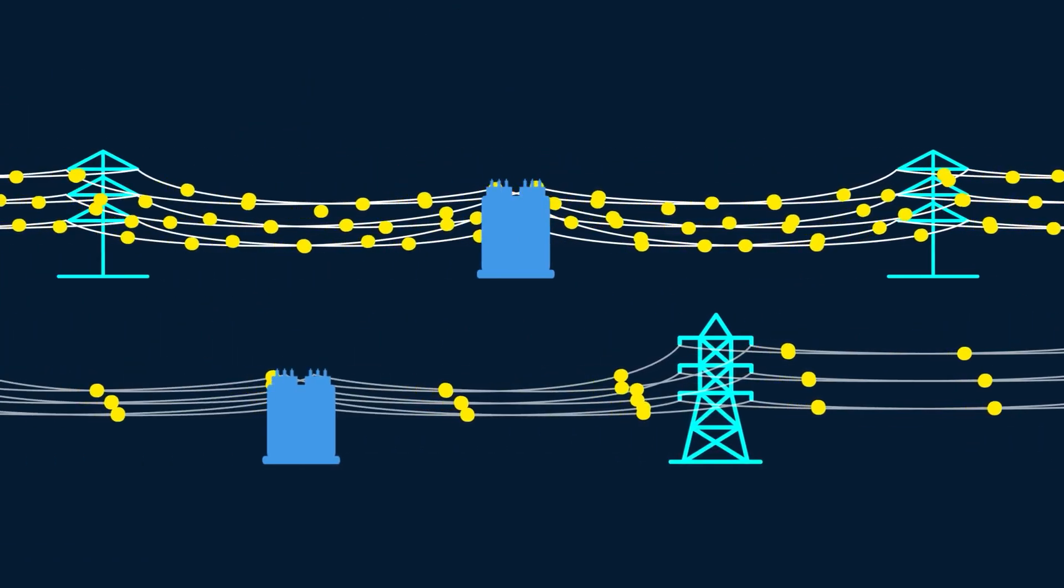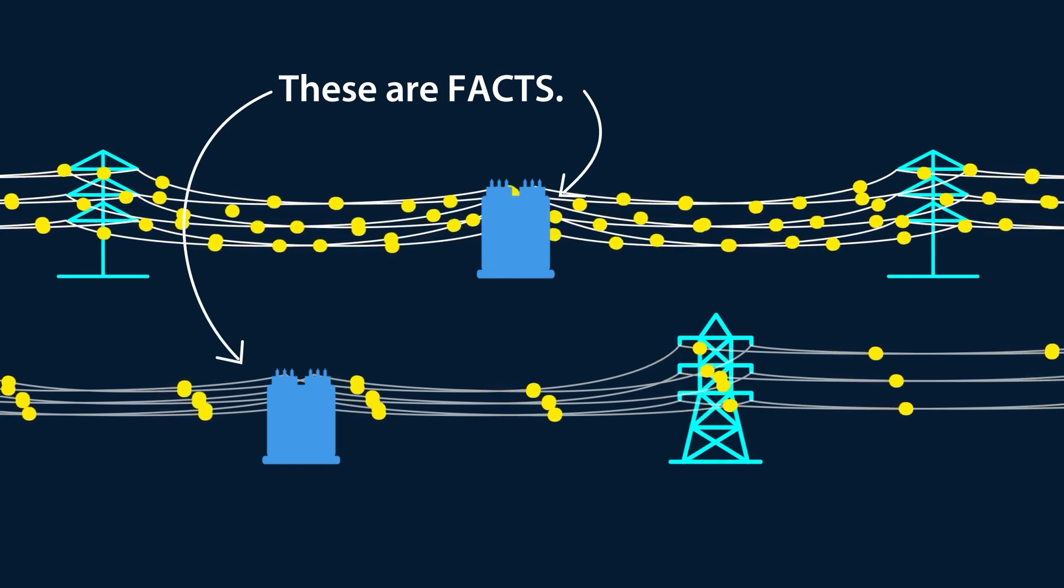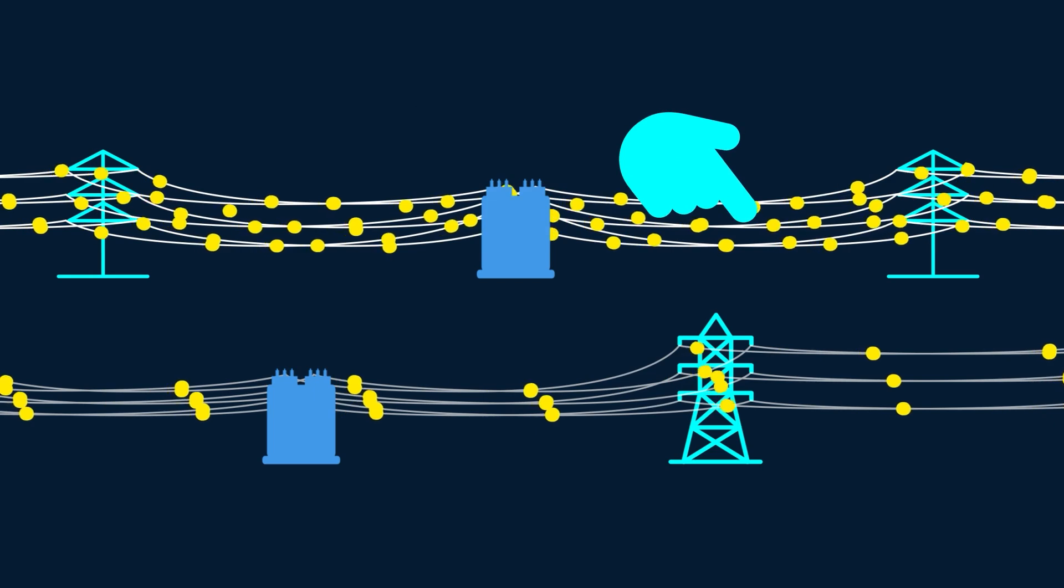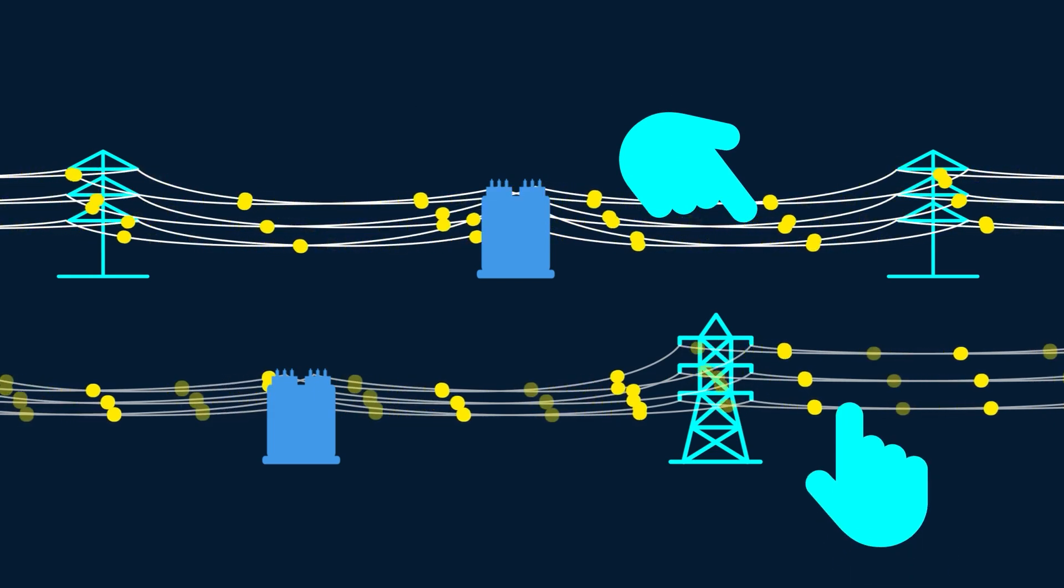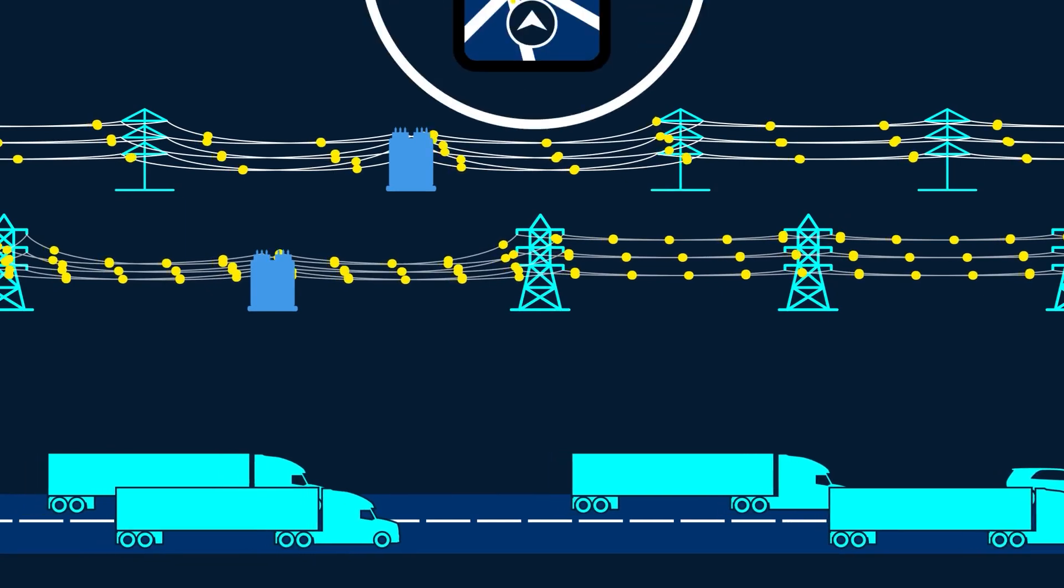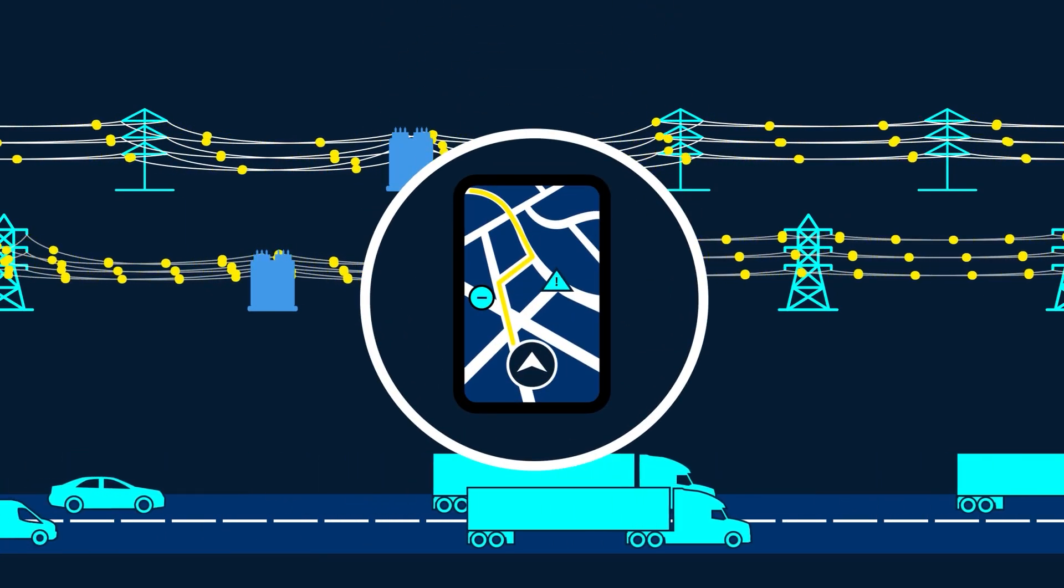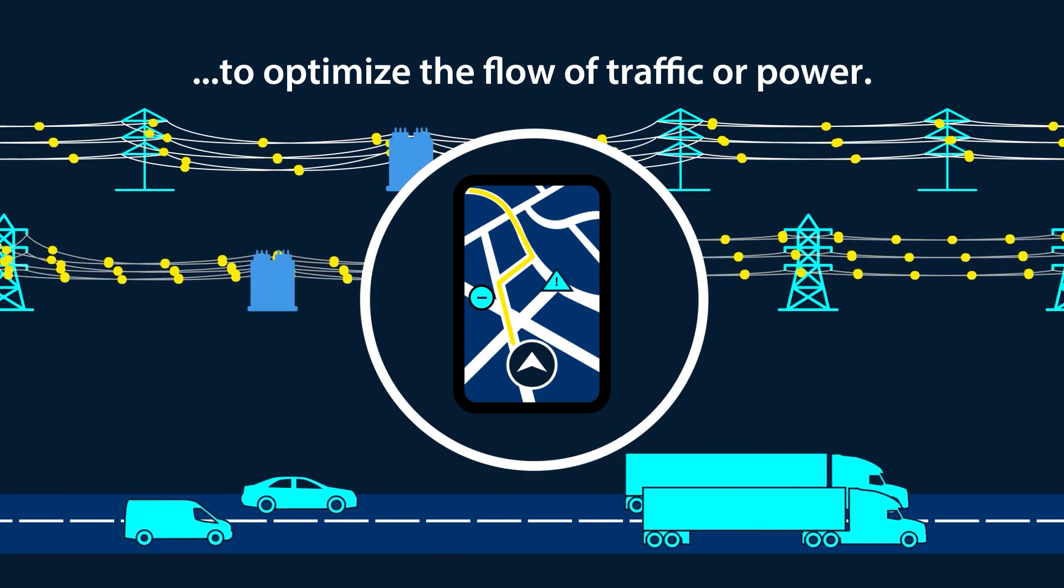These hardware devices attach to new or existing transmission and monitor and analyze power flow in real time to steer electricity to the lines that are underutilized. Both FACTS and navigation apps continuously assess the changing conditions to optimize the flow of traffic or power.